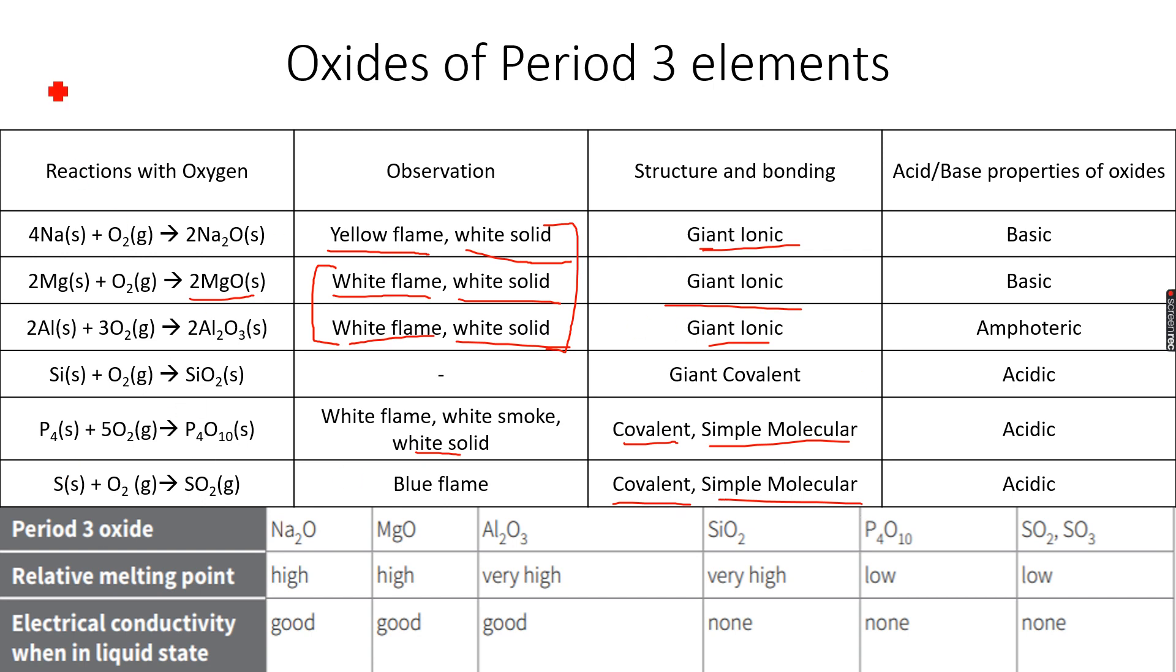So this sulfur dioxide can actually further react with oxygen. You need to remember these state symbols as well, that's why I have given them over here. It reacts with oxygen in a reversible reaction in the presence of V2O5, which is vanadium pentoxide as the catalyst, to form SO3 sulfur trioxide gas.